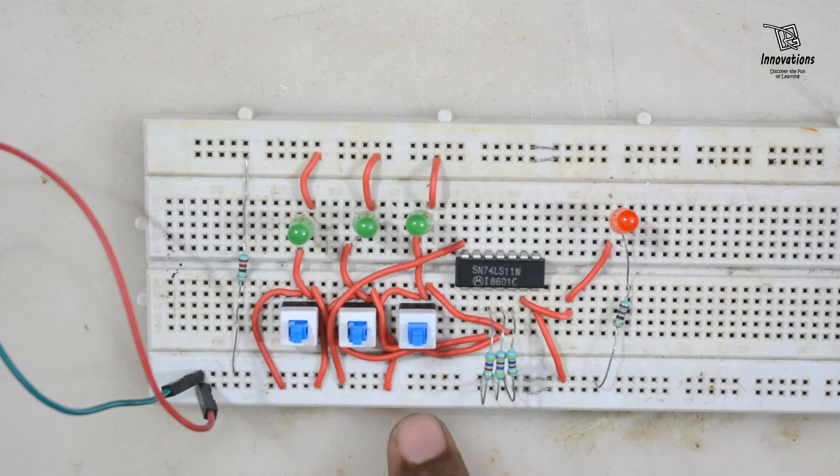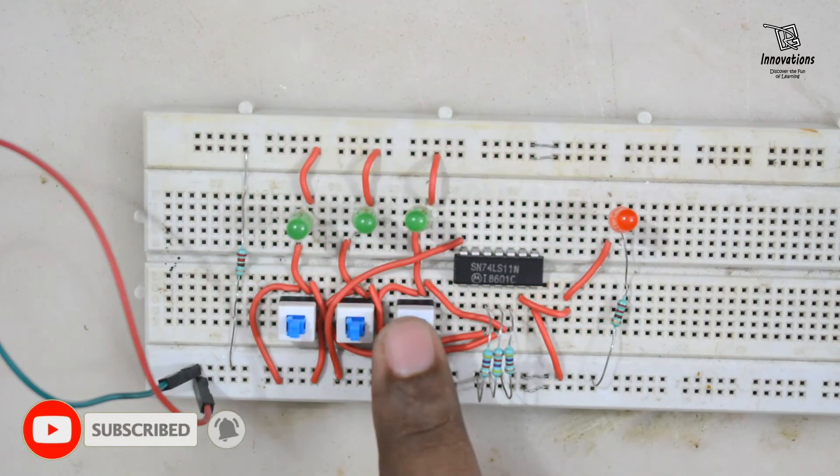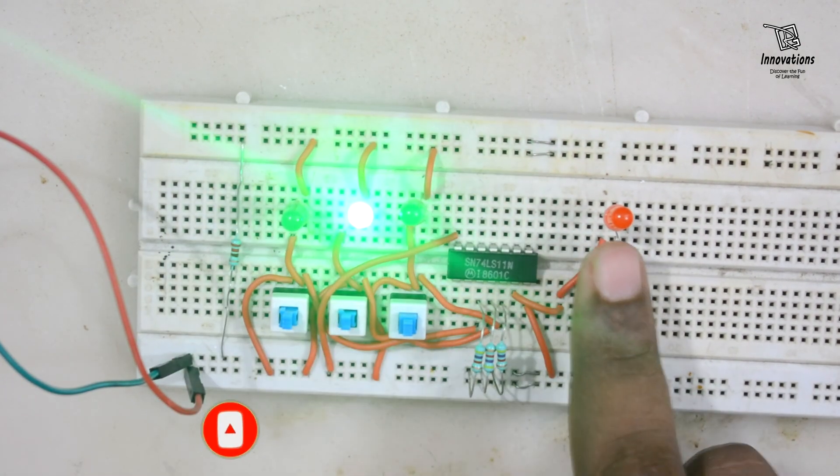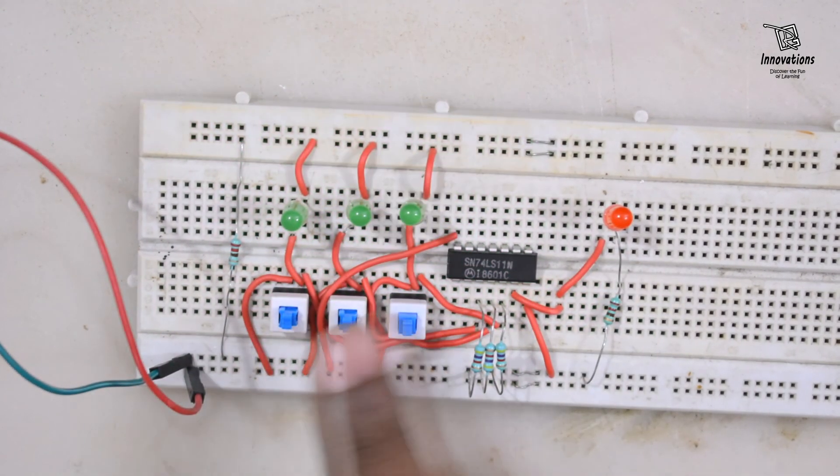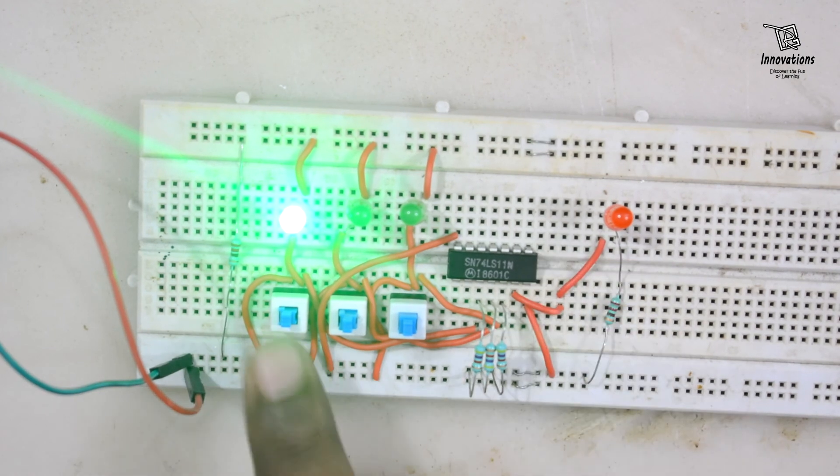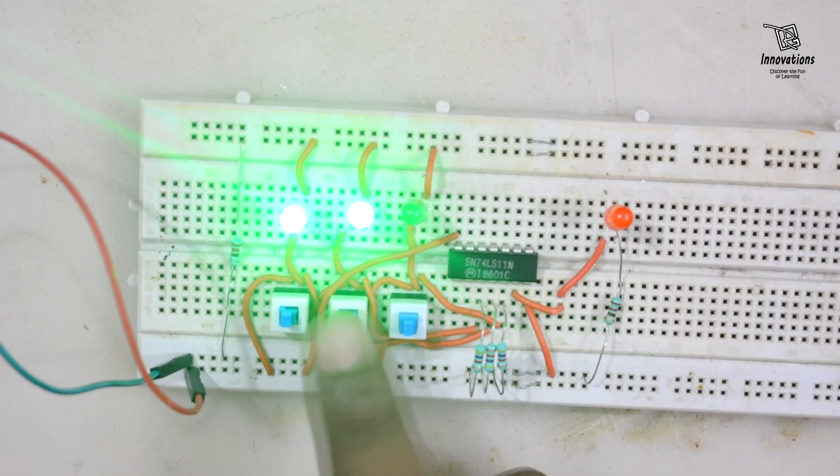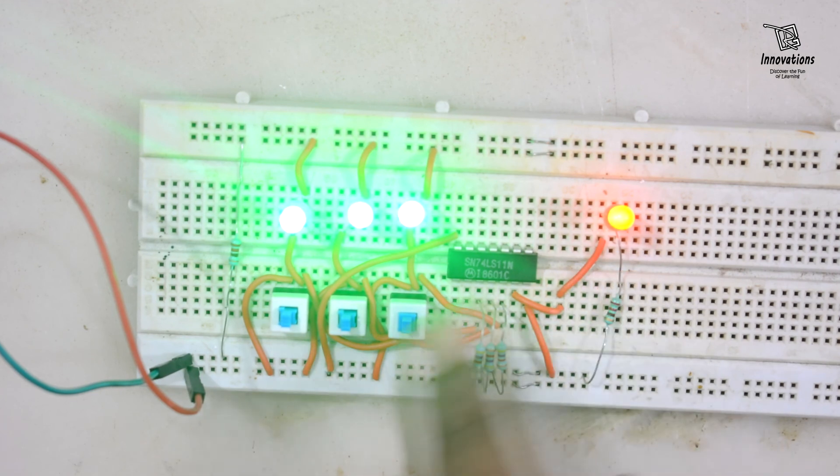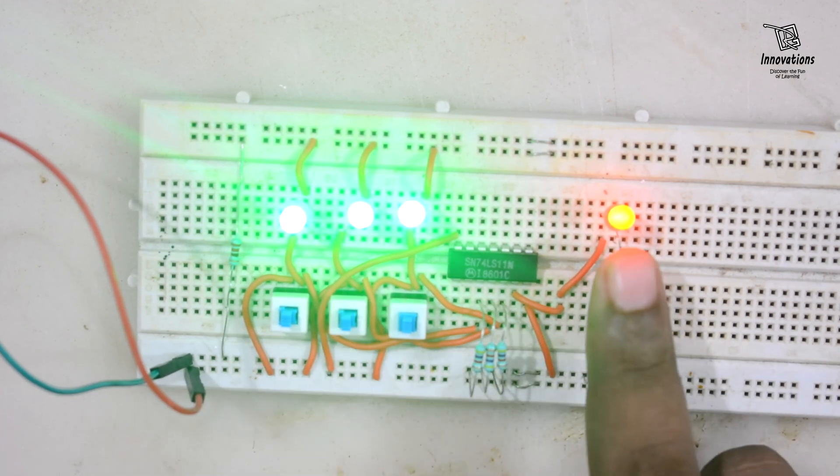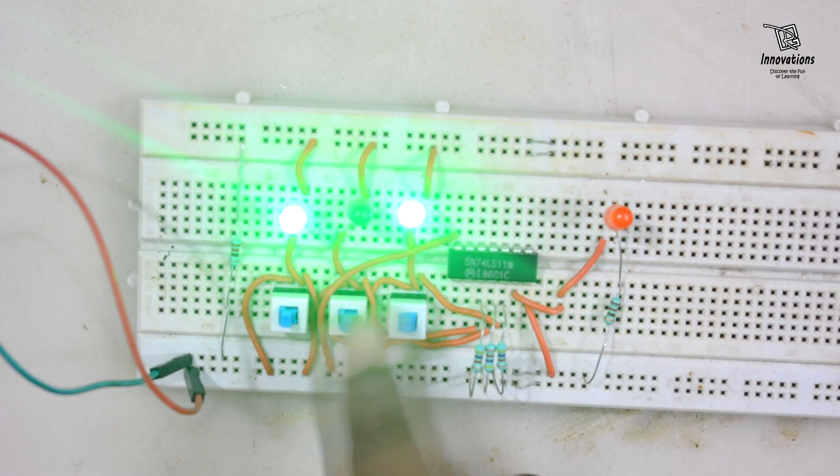Now we will match it with the truth table of the AND gate. So 0 0 0 is 0, 0 0 1 is 0, 0 1 0 is 0, 0 1 1 is 0, and 1 1 1 is 1. So here we can see when all the inputs are 1 then only the output is high or 1. And when any of the inputs are 0 the output is 0. So this satisfies the truth table of the AND gate.